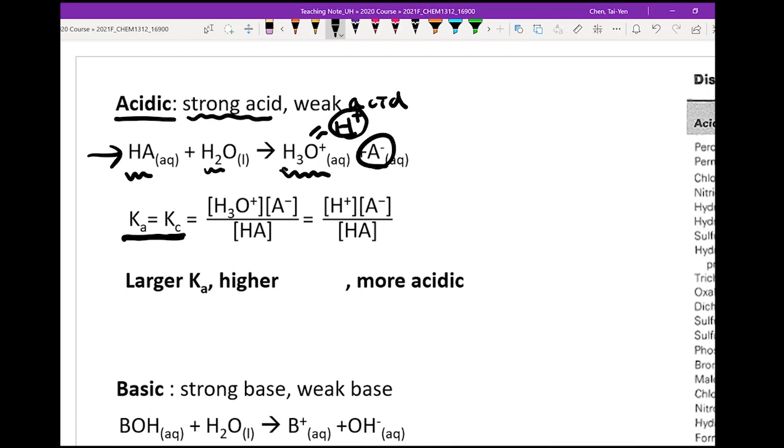you know on top, it's your product - H3O+ times A-. At the bottom, it's only your HA, because substances existing in pure liquid or solid form don't go into your equation. Nothing special - this is all the things we've learned.